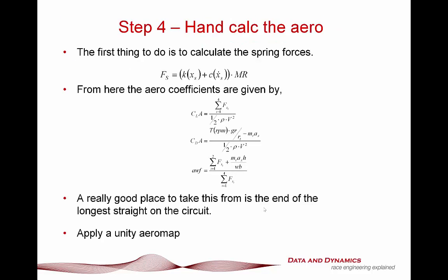Step four: hand calculate the aero. You want to do a hand calculation of the car at the end of the longest straight. Number one, it's good practice, but also you want to create a Unity aero map for it. After you've gone through the trouble of measuring up the car and making sure the data is well calibrated, that gives you your first cut of the aero, and using a Unity aero map is going to make your first iteration at correlation a hell of a lot easier.